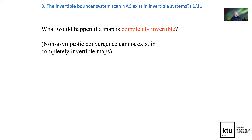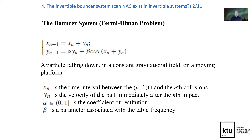What would happen if a map is completely invertible? It is a very well-known fact that non-asymptotic convergence cannot exist in completely invertible maps. I will use the paradigmatic bouncer system to illustrate what happens in the invertible bouncer system when we map it with the means of H-ranks.